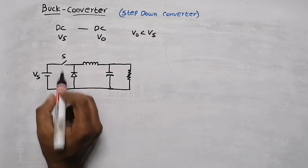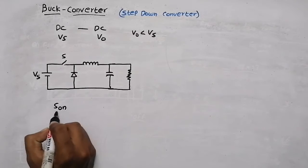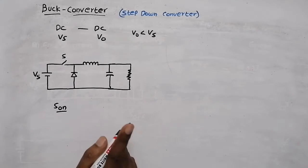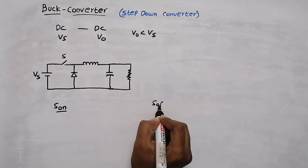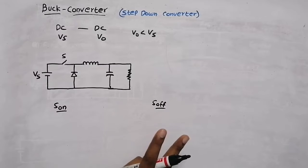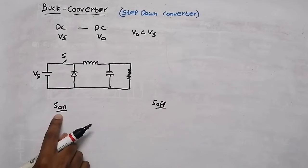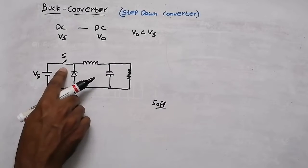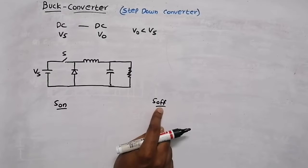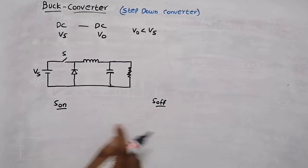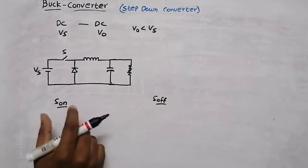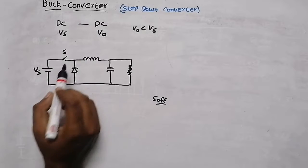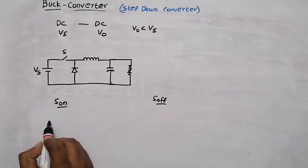This is the circuit of the Buck converter, and it has two modes of operation. Mode 1 is when the switch is on, and Mode 2 is when the switch is off.